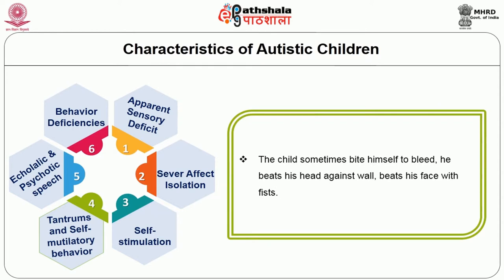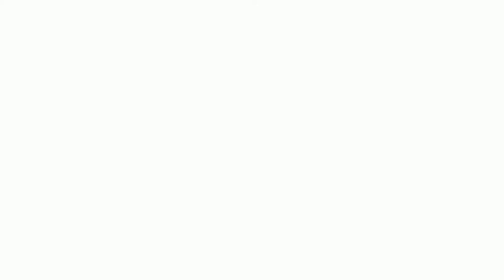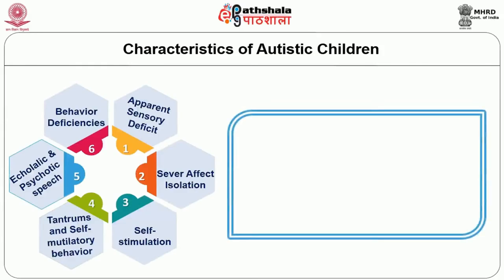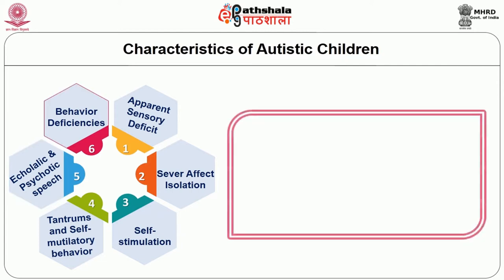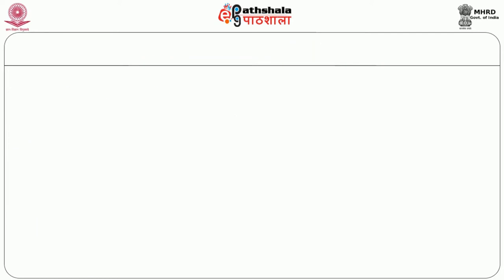Fourth, tantrums and self-mutilatory behavior: the child sometimes bites himself to the point of bleeding, beats his head against the wall, or beats his face with his fist. Fifth, echolatic or psychotic speech: these children are mute — they do not speak or utter any simple words — or they repeat what you speak to them. Sixth, behavior deficiencies: a five or ten year old child may behave like a one year old child.